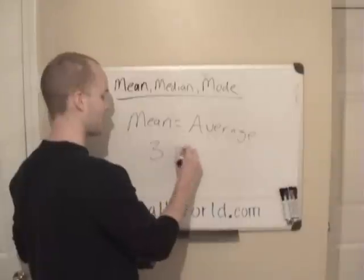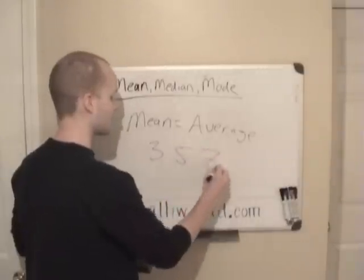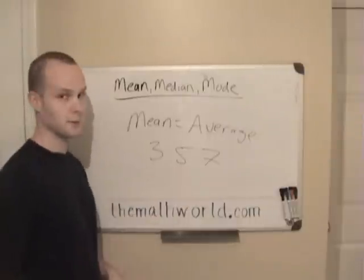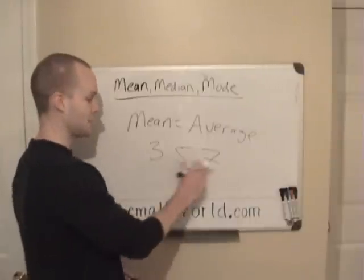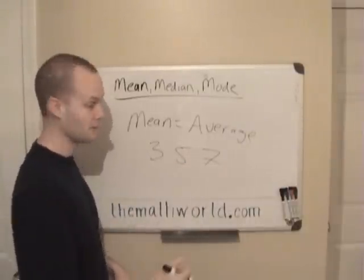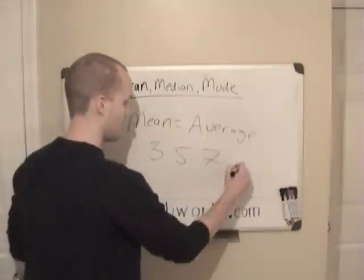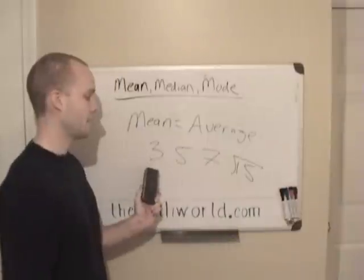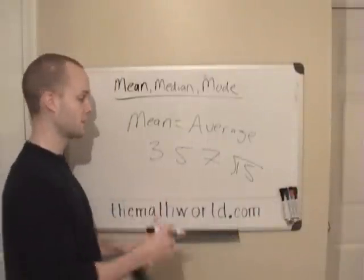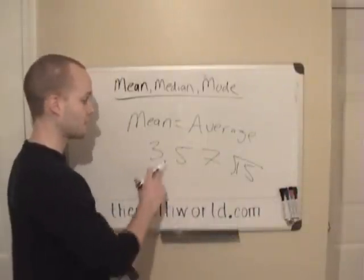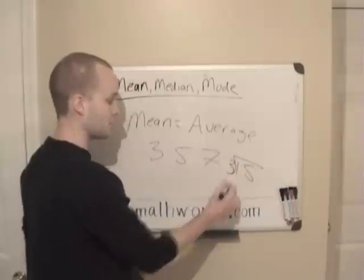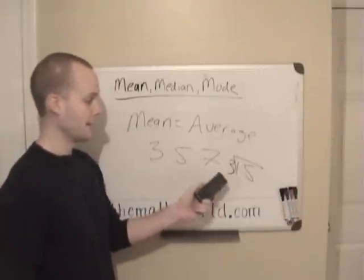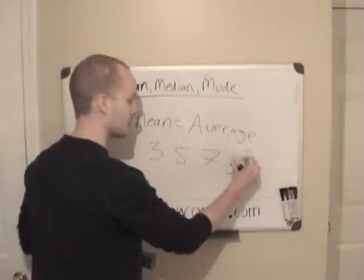If we're given three numbers — 3, 5, and 7 — the first thing you want to do is add all the numbers together. So 3 plus 7 is 10, plus 5 is 15. And then you want to divide by the total amount of numbers that you have. In this case we have three numbers.